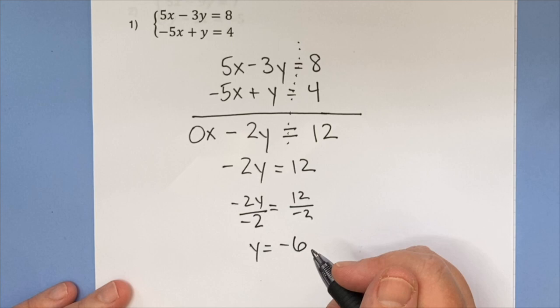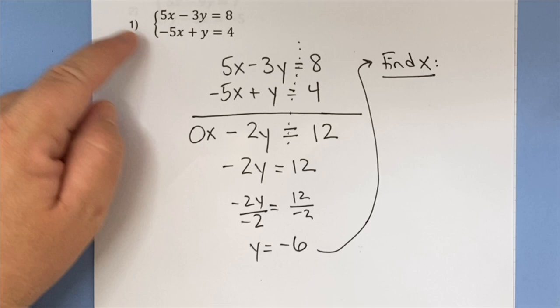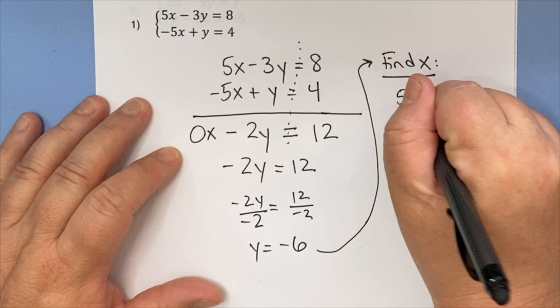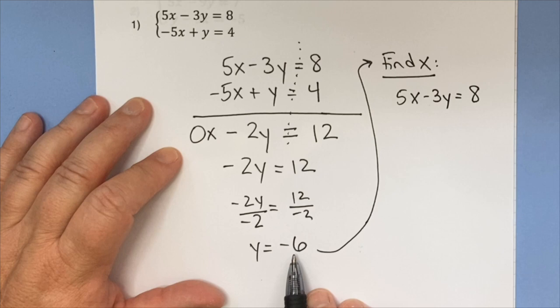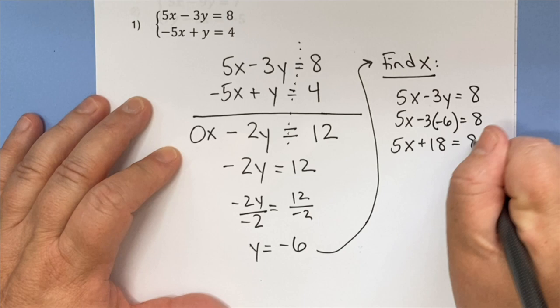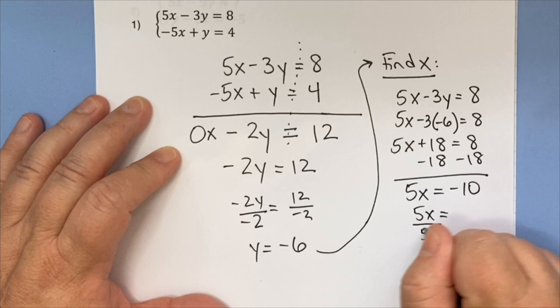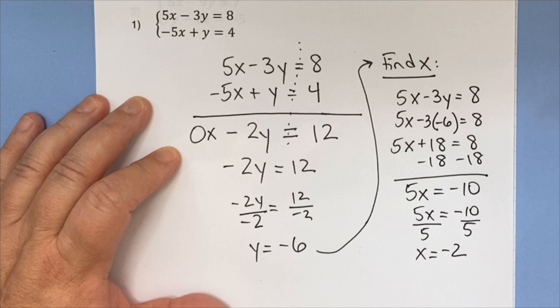We're not done yet though. Now we're going to find x. The problem is, to find x, we're going to have to do a little bit more work. I'm going to choose the top equation, the one we would normally call A, and I'm going to plug in y. So I've got 5x plus 18 equals 8. Subtract 18 from both sides. 5x equals negative 10. Divide both sides by 5. X equals negative 2.